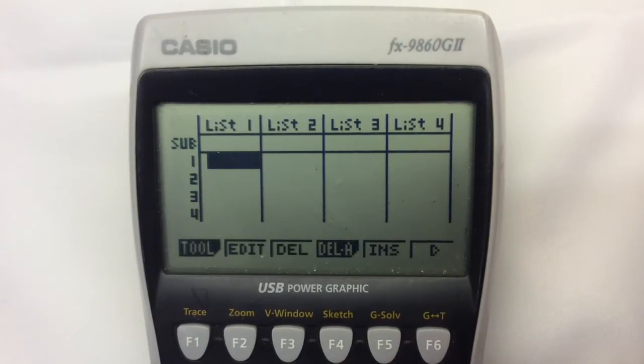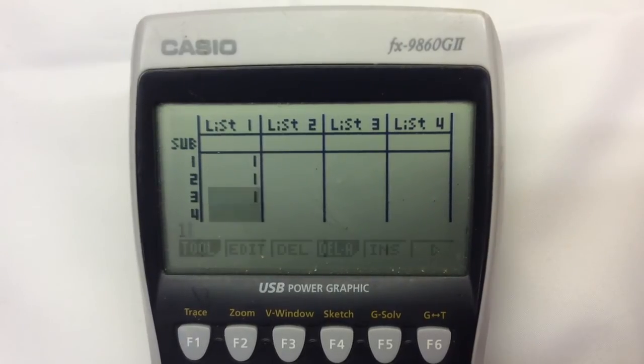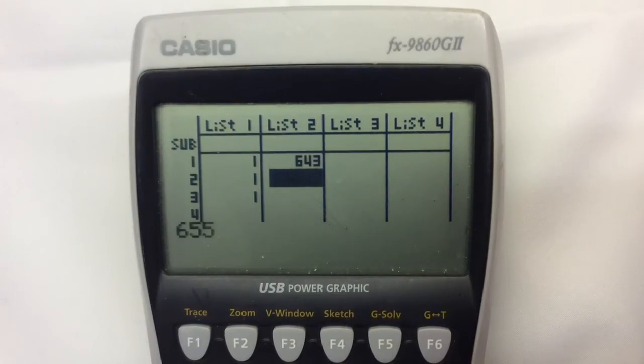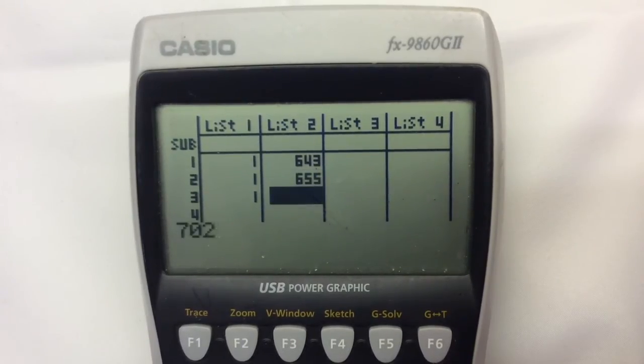We've got three pieces of data for group A. I'm going to put one. We're going to use numbers rather than letters. And then these are the three pieces of data for group A: 643, 655, 702.